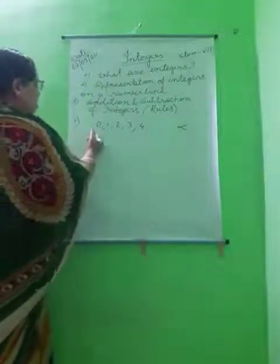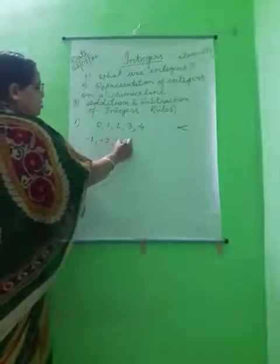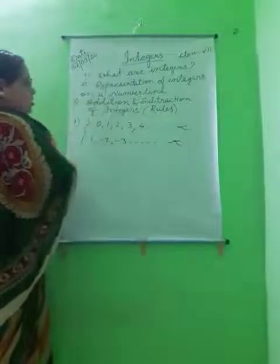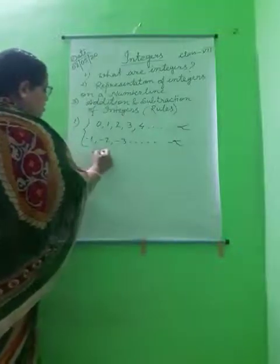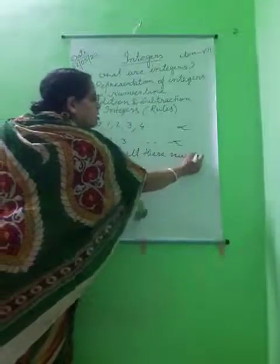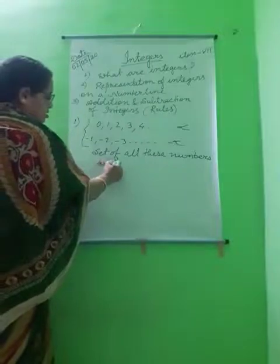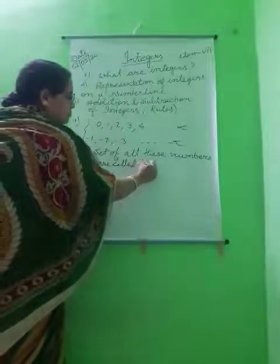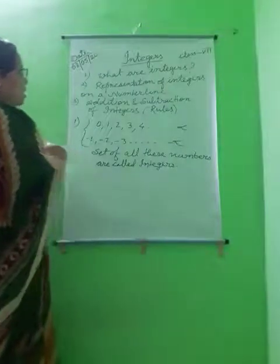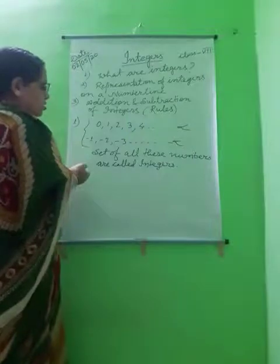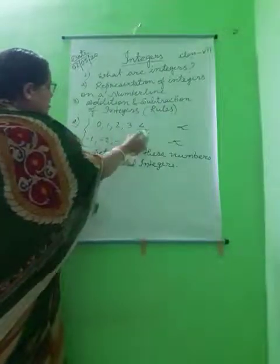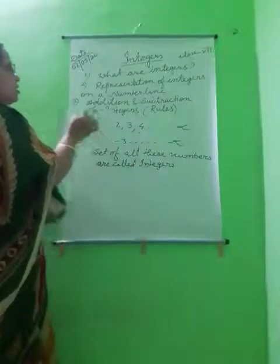Negative whole numbers are minus 1, minus 2, minus 3, up to minus infinity. Set of all these numbers are called integers. So the definition of integers is: all positive and negative whole numbers are known as integers. All positive whole numbers together with negative whole numbers are known as integers.